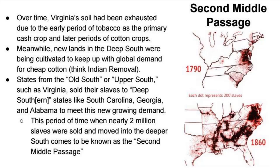Looking at slave populations in 1790 versus 1860, you can still see significant colorations in Virginia and North Carolina — they are dependent on slavery to some degree — but look at how much darker the deep south becomes. In 1790, the only really dark coloration is the coastal region of South Carolina. Slavery absolutely exploded due to the cotton gin, among other things.